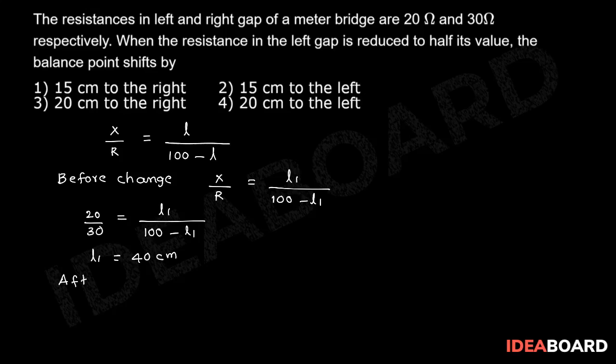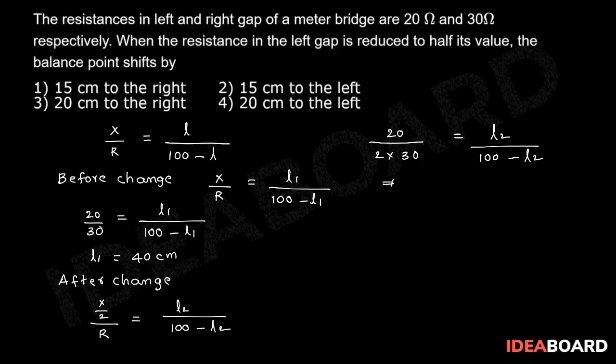After change, X by 2 by R is equal to L2 by 100 minus L2. So 20 by 2 into 30 equals L2 by 100 minus L2. After simplification, L2 equals 25 centimeter.